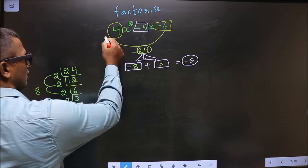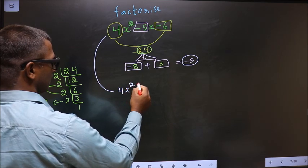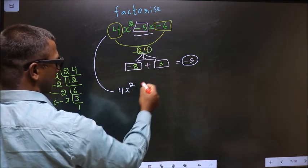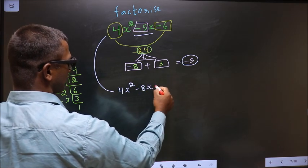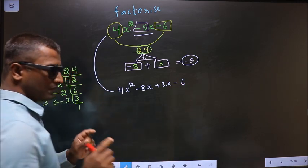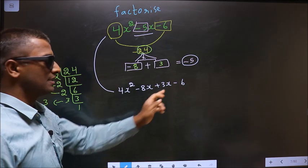Now, change this to 4x square. In place of minus 5x, you write minus 8x plus 3x minus 6. Understood? In place of minus 5x, I have written this.